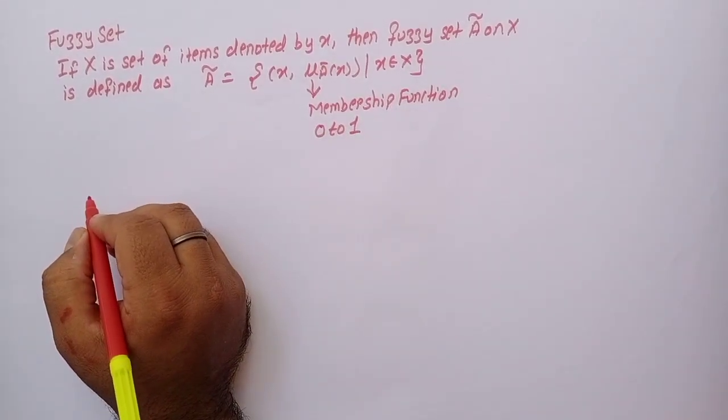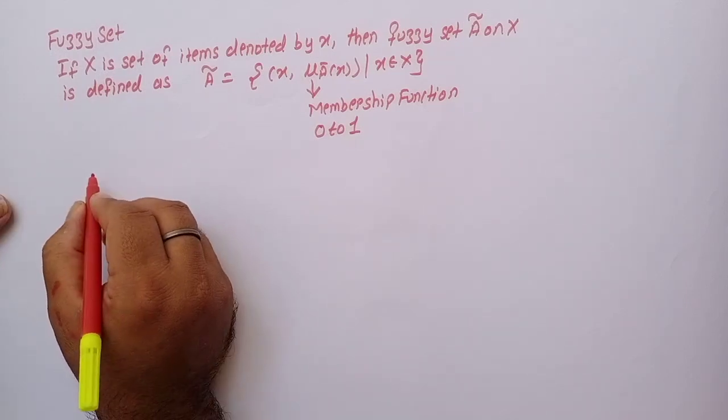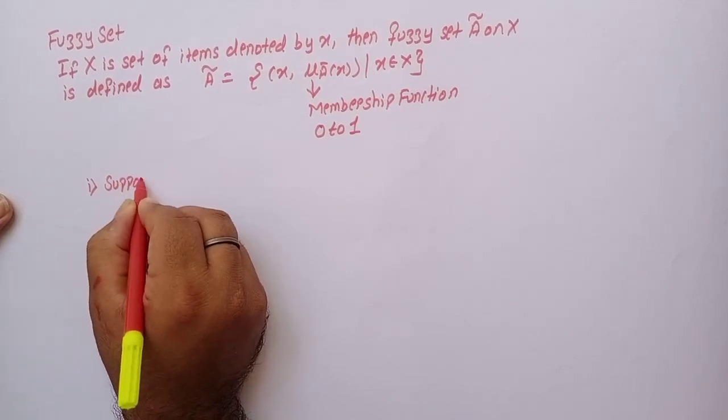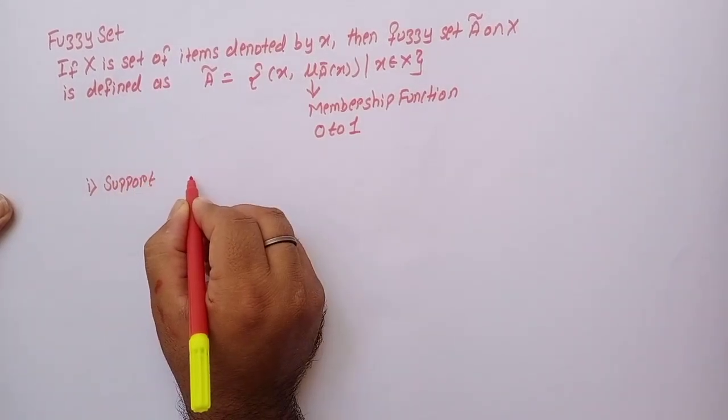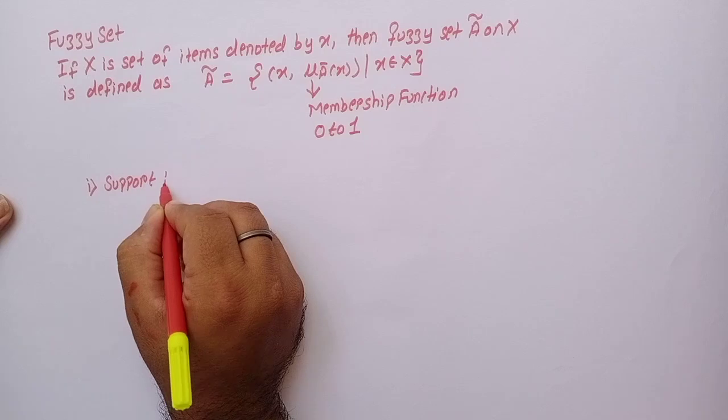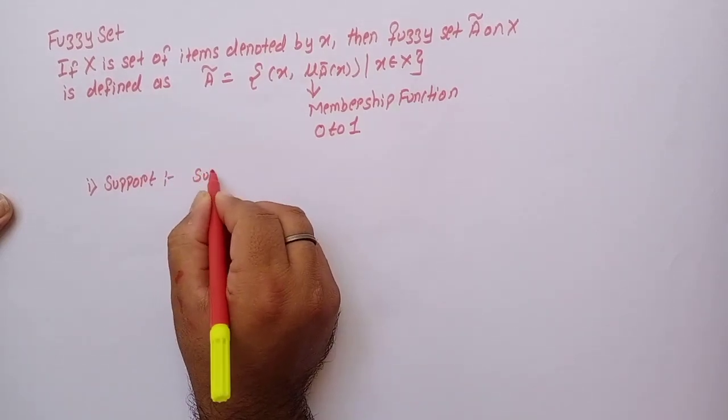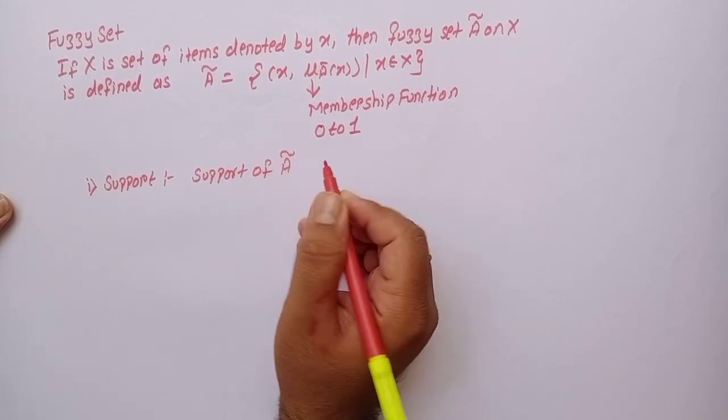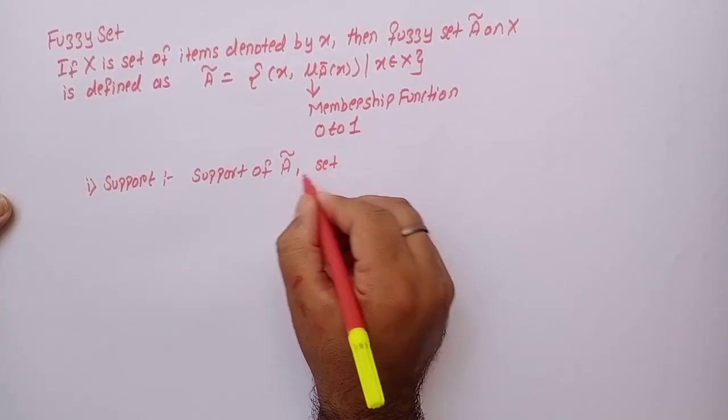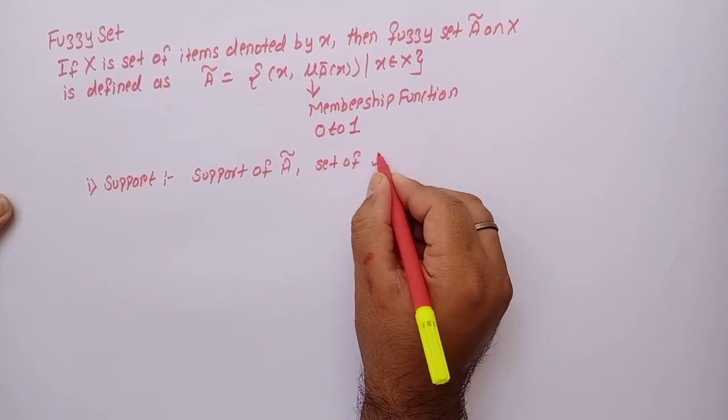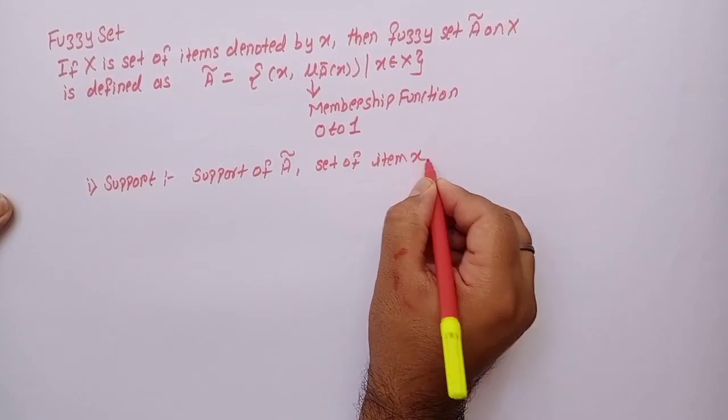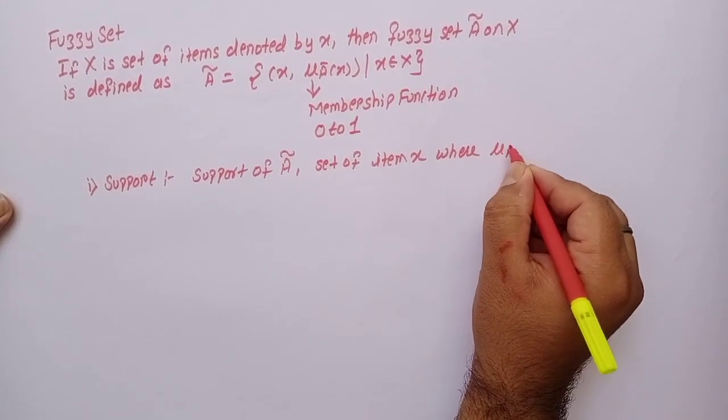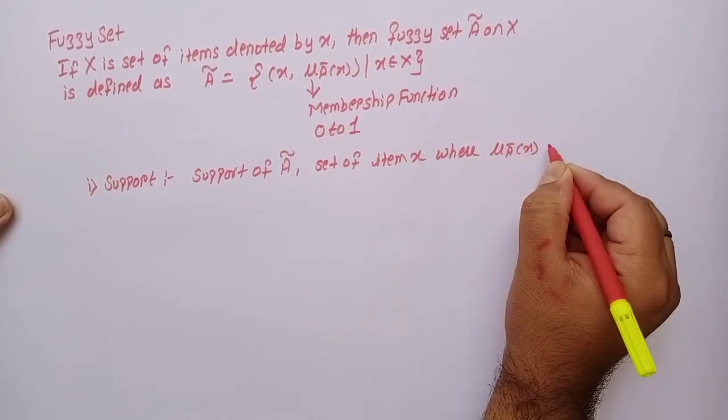There are few concepts related with the fuzzy set. Those are support. Support of fuzzy set A can be defined as set of item x where membership function of x is greater than zero.